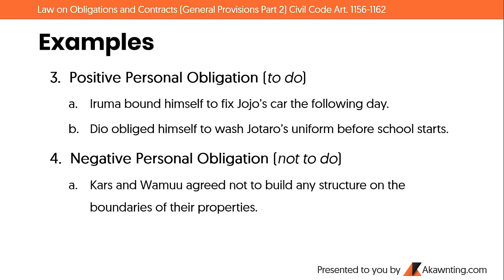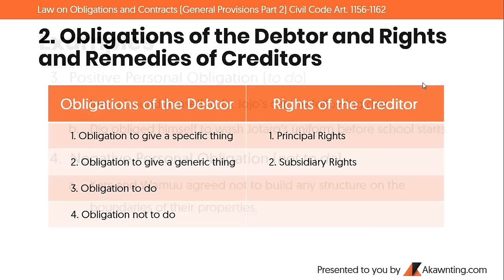Positive personal obligation, or obligation to do: Example 1 — Iruma bound himself to fix Jojo's car the following day. Example 2 — Do obliged himself to wash Jotaro's uniform before school starts. Negative personal obligation, obligation not to do: Cars and Wamu agreed not to build any structure on the boundaries of their properties.